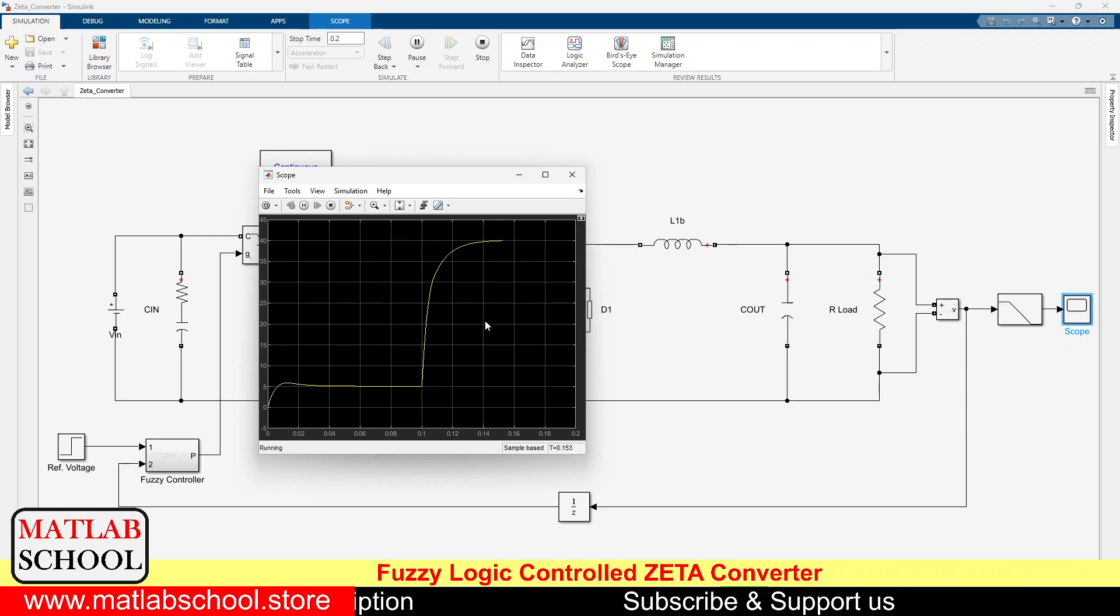So the voltage has settled perfectly at 40 volts. So as you can see, for the lower voltages the overshoot is there, and for higher voltages the overshoot is not there.